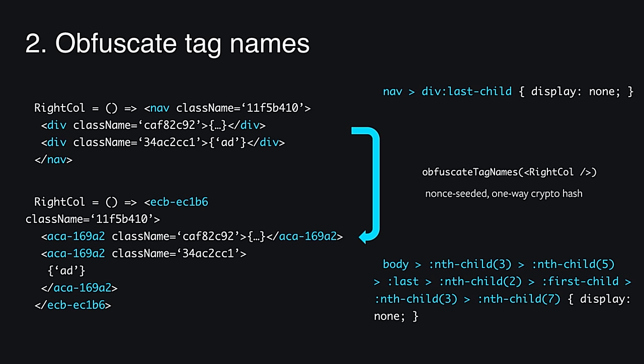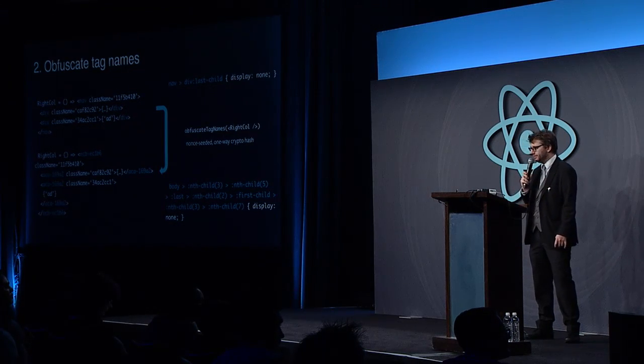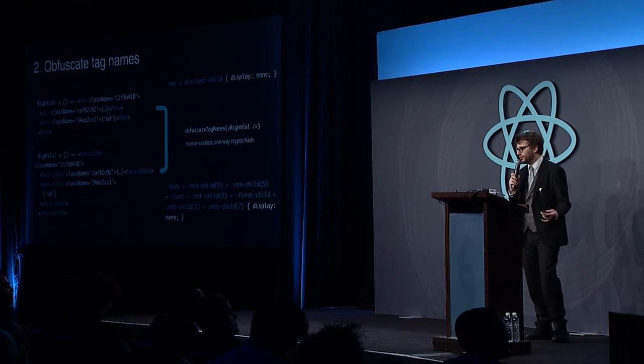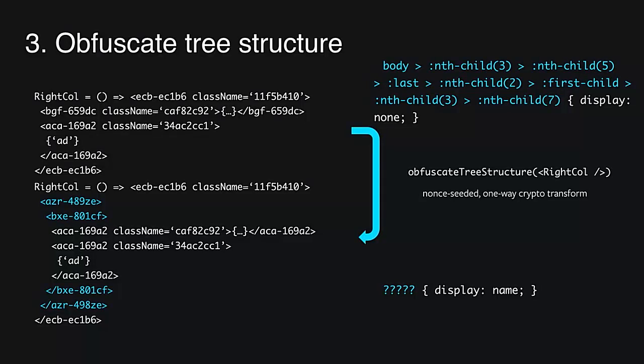They would have to use quite complex selectors based entirely on the graph structure of the HTML tree, but with enough effort they could still manage to target it. And that's why we introduced our third transform: tree structure obfuscation. This transform is a bit more complicated. It inserts variable-depth intermediate elements to shuffle the tree structure itself, once again using a cryptographic hash, making it impossible to predict for third-party scripts.